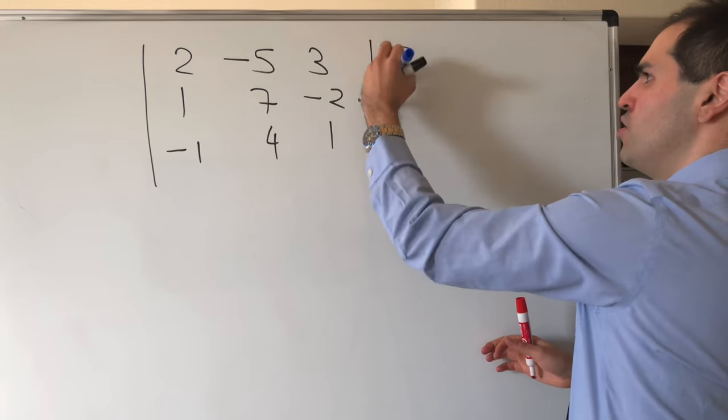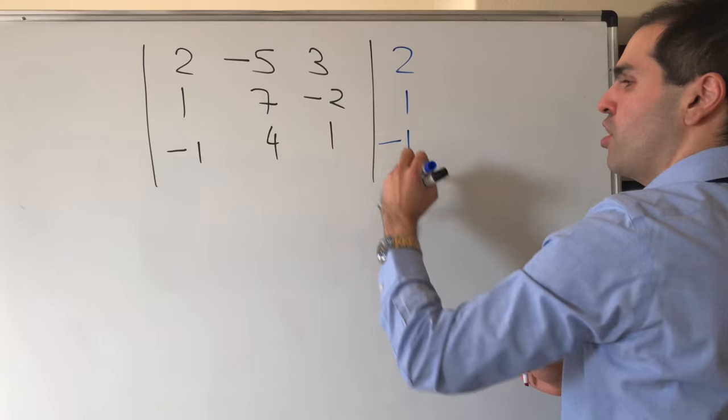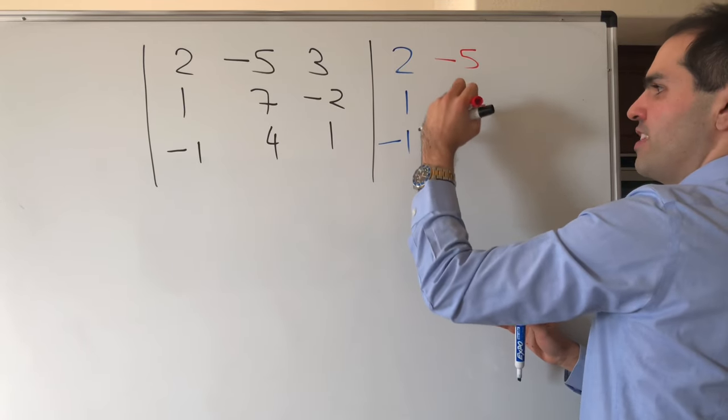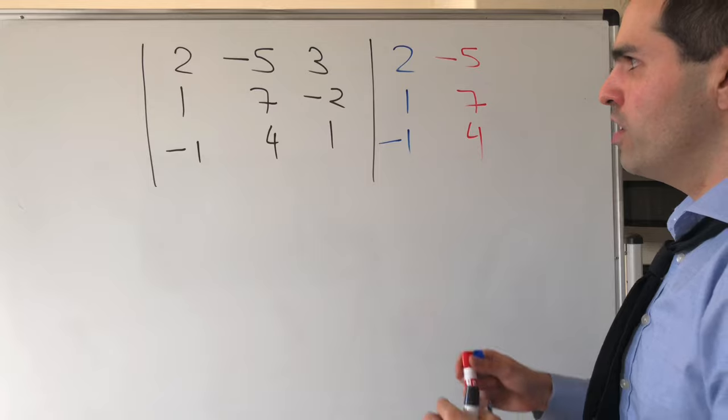Well, it's pretty simple. You just repeat the first column and the second column, so minus 5, 7, 4, and then what you do...